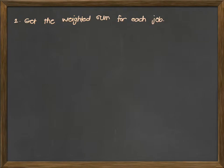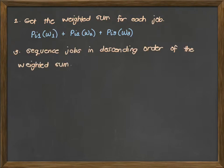The second step is to get the weighted sum for each job using the weights we have assigned for each machine. So the processing time for machine 1 multiplied by the weight plus the processing time of machine 2 times the second weight plus the processing time of machine 3 times the third weight. Third is to sequence jobs in descending order of the weighted sum. So the sequence in Palmer's heuristics is determined by the descending order of the weighted sum we have computed.